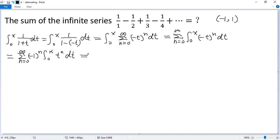Using fundamental theorem of calculus, so we get sigma n equals 0 to infinity, negative 1 to the power n. The antiderivative of t to the power n is t to the power n plus 1 over n plus 1. Then evaluate at x and 0.